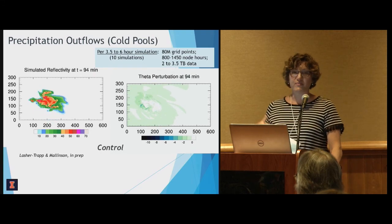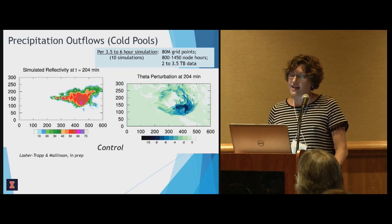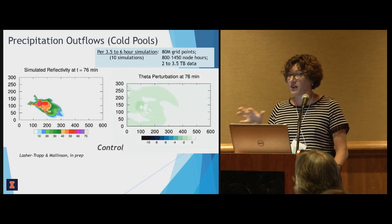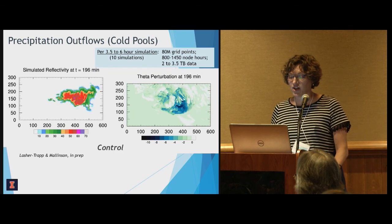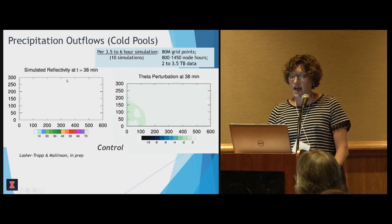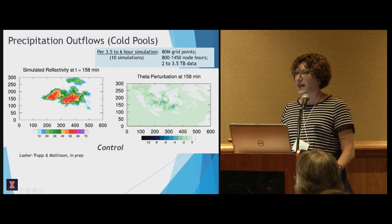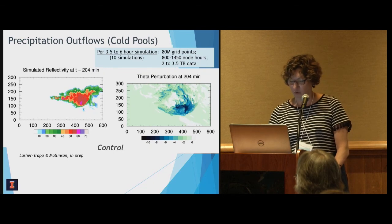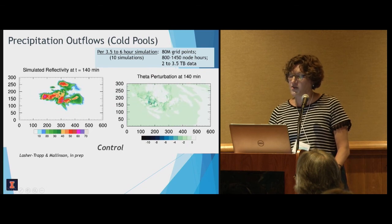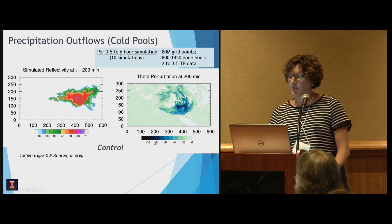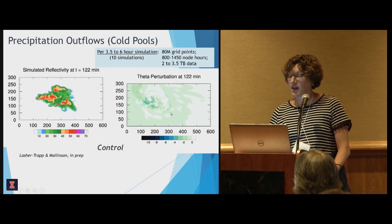Finally, on precipitation outflows at the thunderstorm scale: these simulations run three and a half to six hours, and we did ten of them for sensitivity studies. On the left is a time series of simulated radar reflectivity showing what precipitation at the ground looked like. On the right is the cold pool being produced — the outflow — where darker blues are colder, sometimes reaching eight Kelvin below the environment. High resolution allows us to see a lot of inhomogeneities here as well.